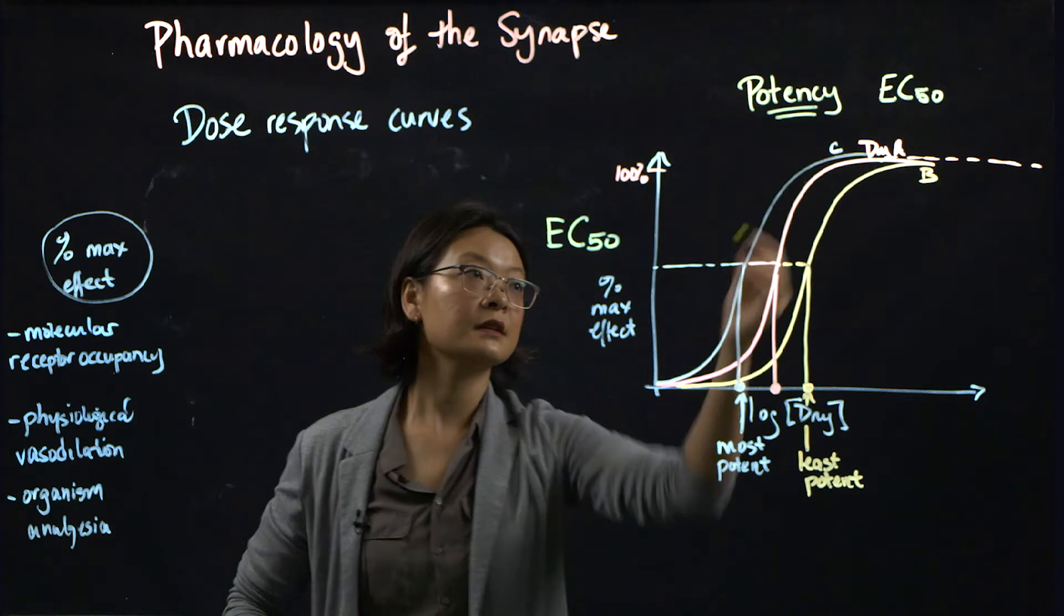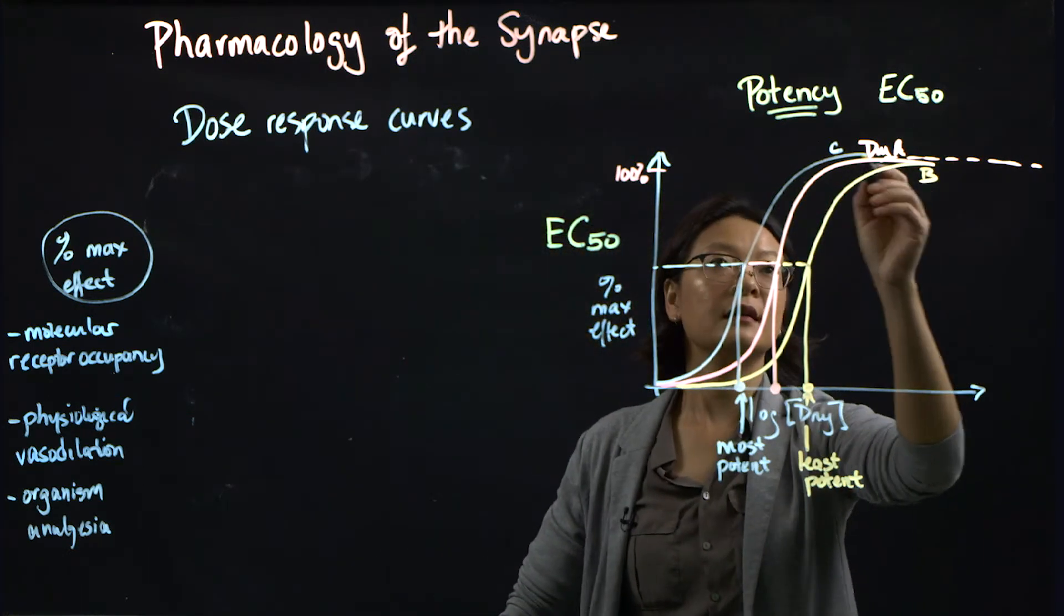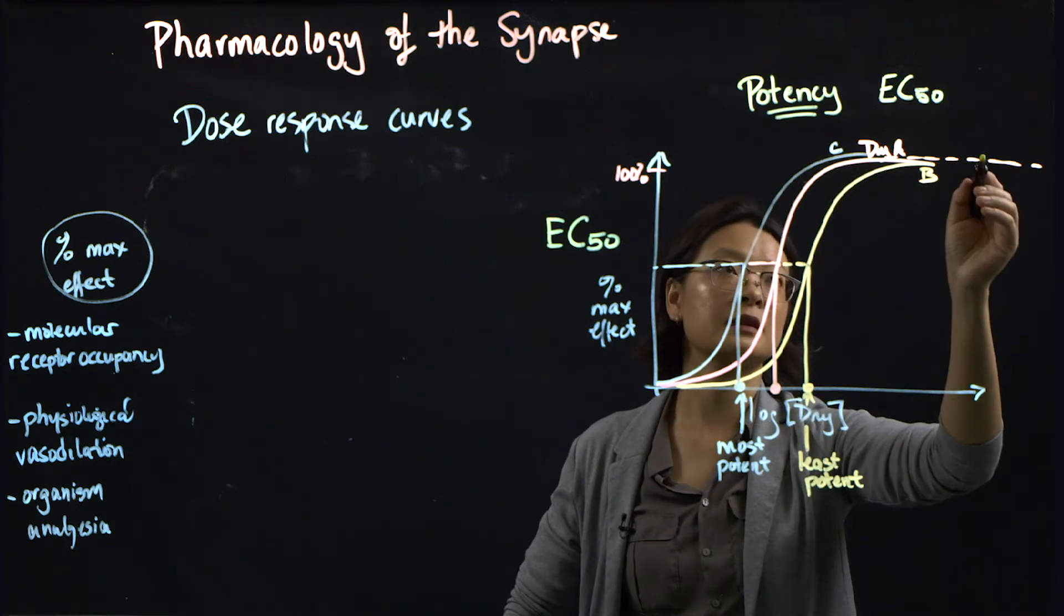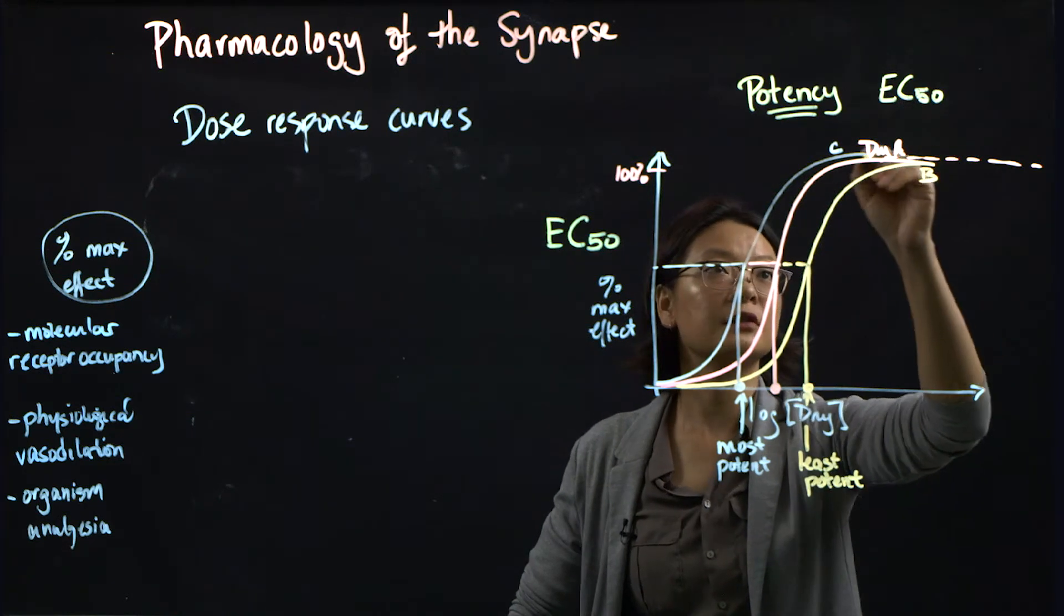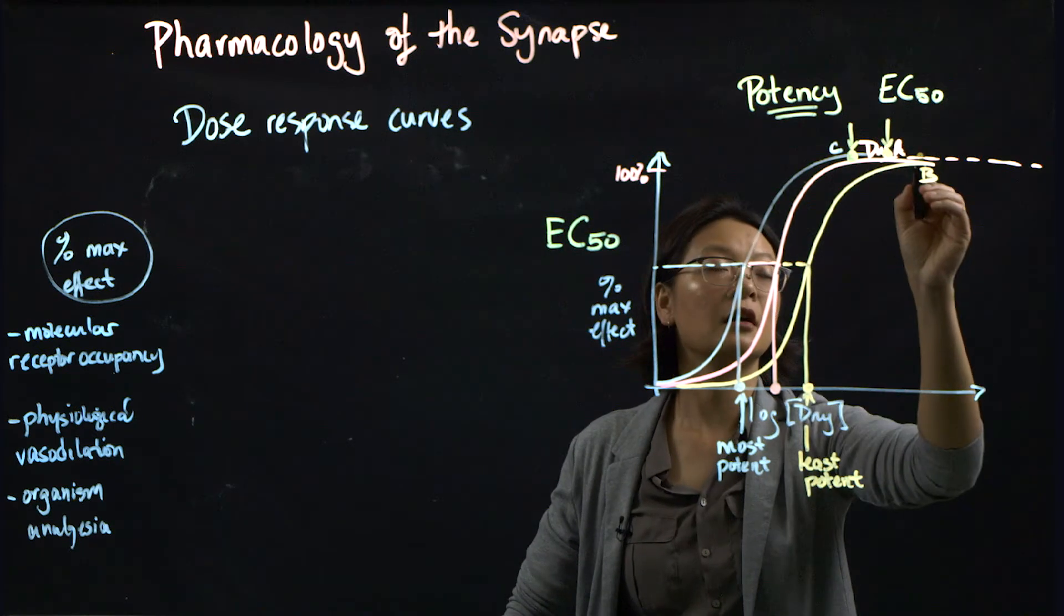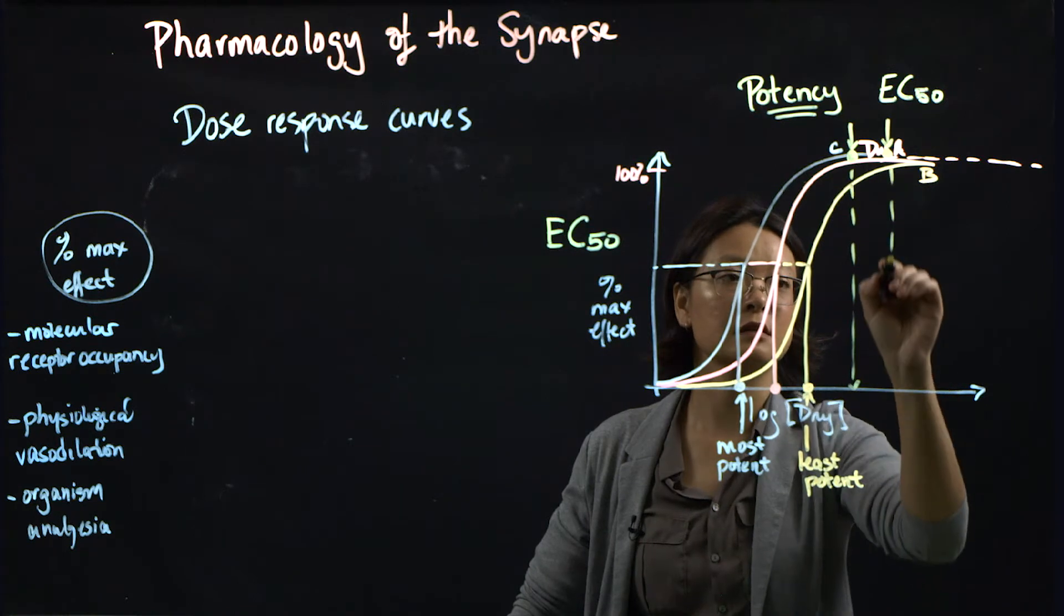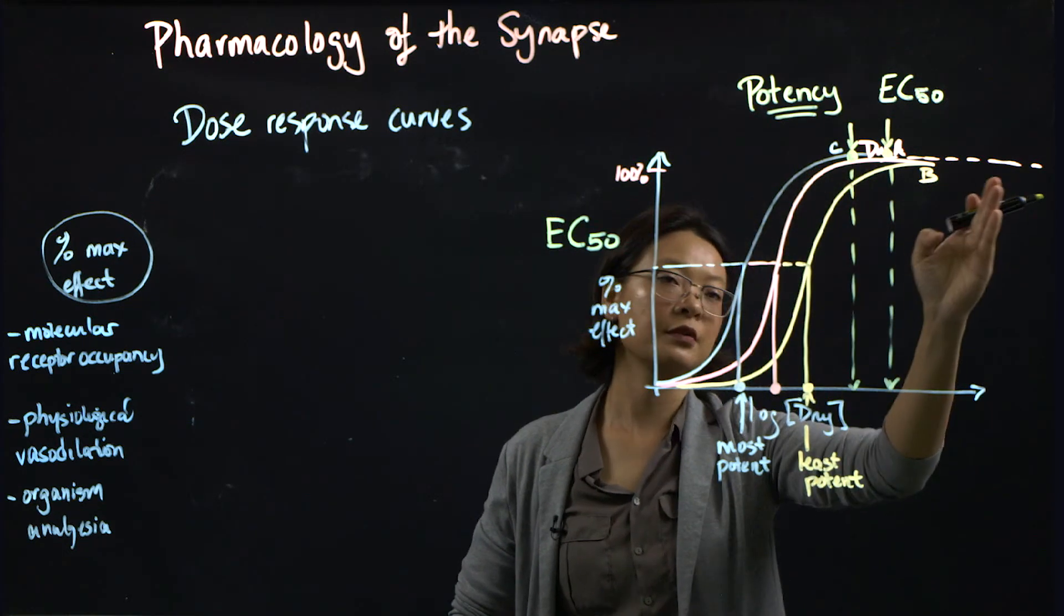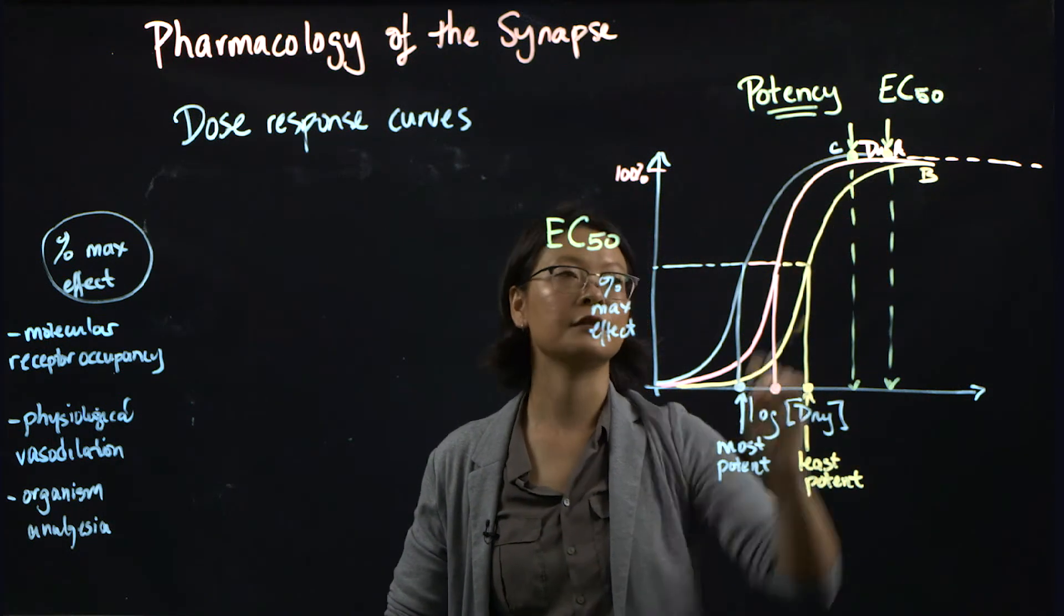So, why is potency not taken from an EC100? Well, you can tell here that when the drugs reach asymptote maximum of 100 percent activity, it's really difficult to identify where 100 percent is. Is it here? Is it here? Along the line, you can get very different drug concentrations based on where you dictate where 100 percent falls. So that's why it's hard to identify where the EC100 is.